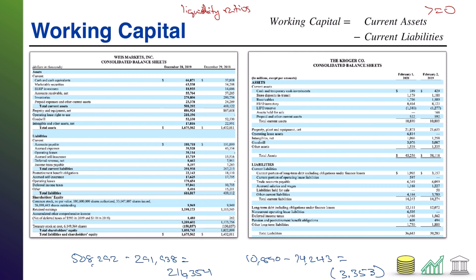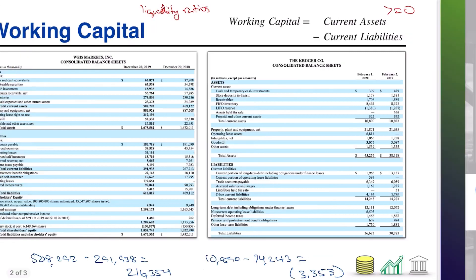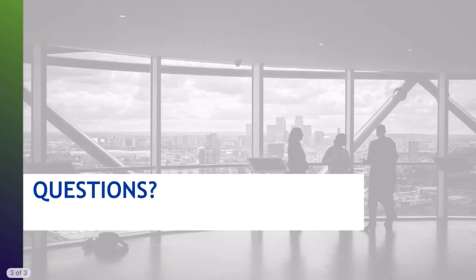So there you have it — working capital for two different companies. You see two very different outcomes, and this is how you would interpret those outcomes. That's it for working capital. Hope you found it interesting and I hope you join me for another video.